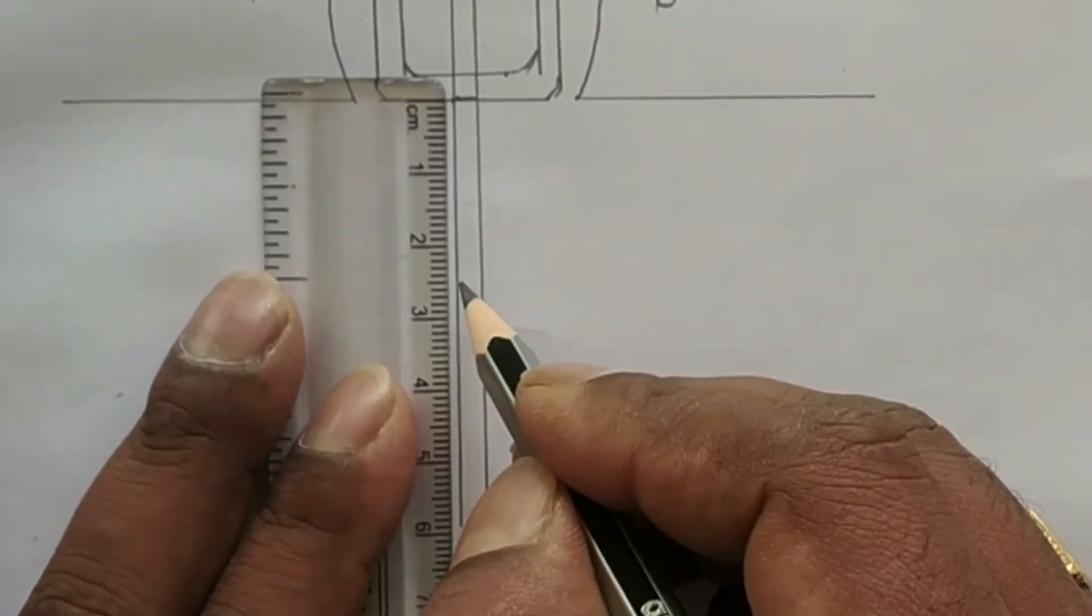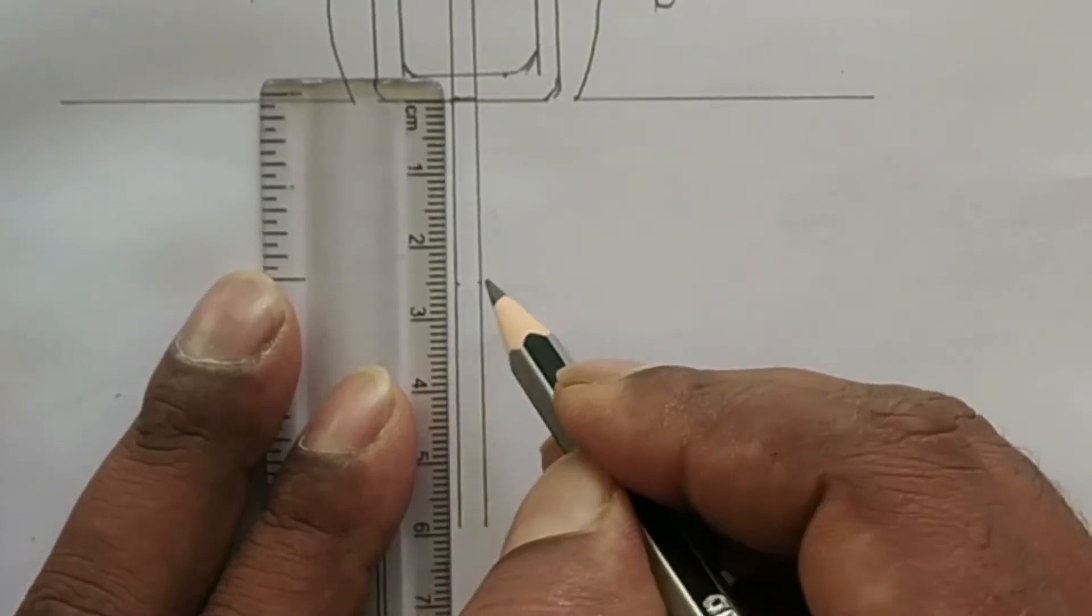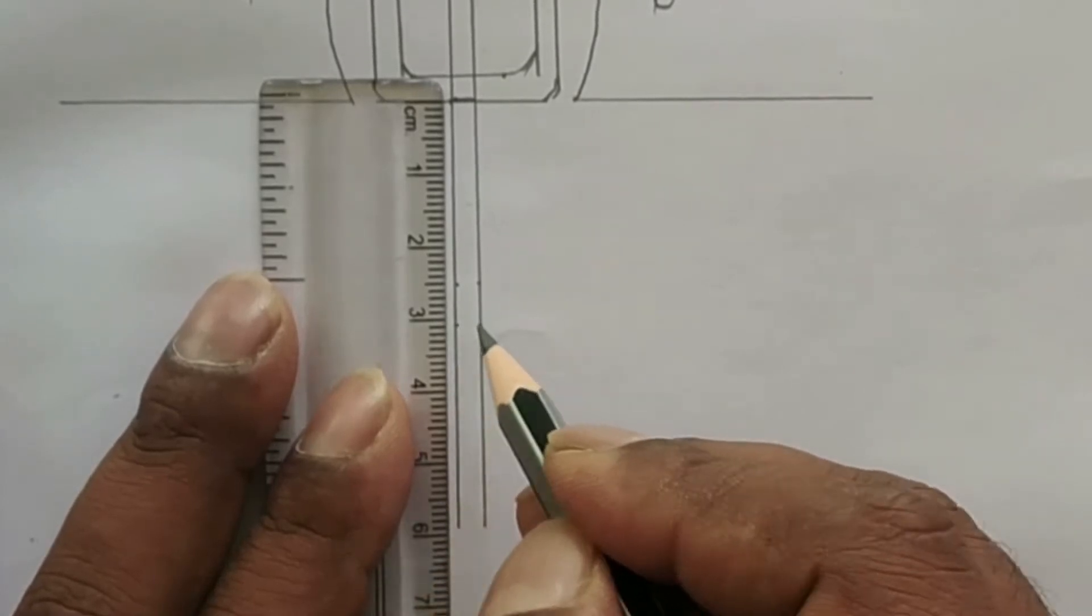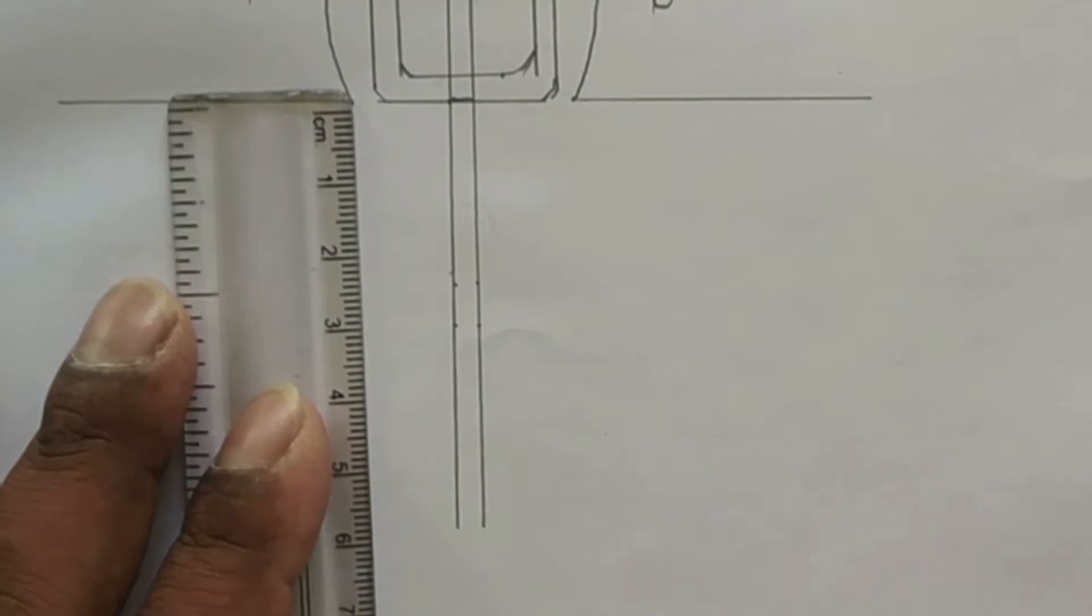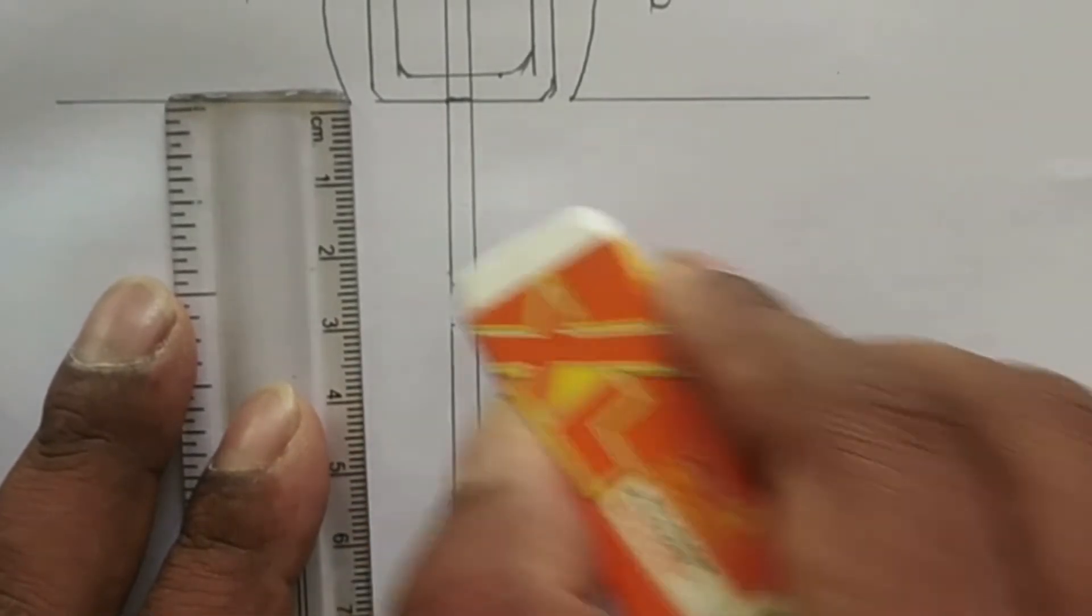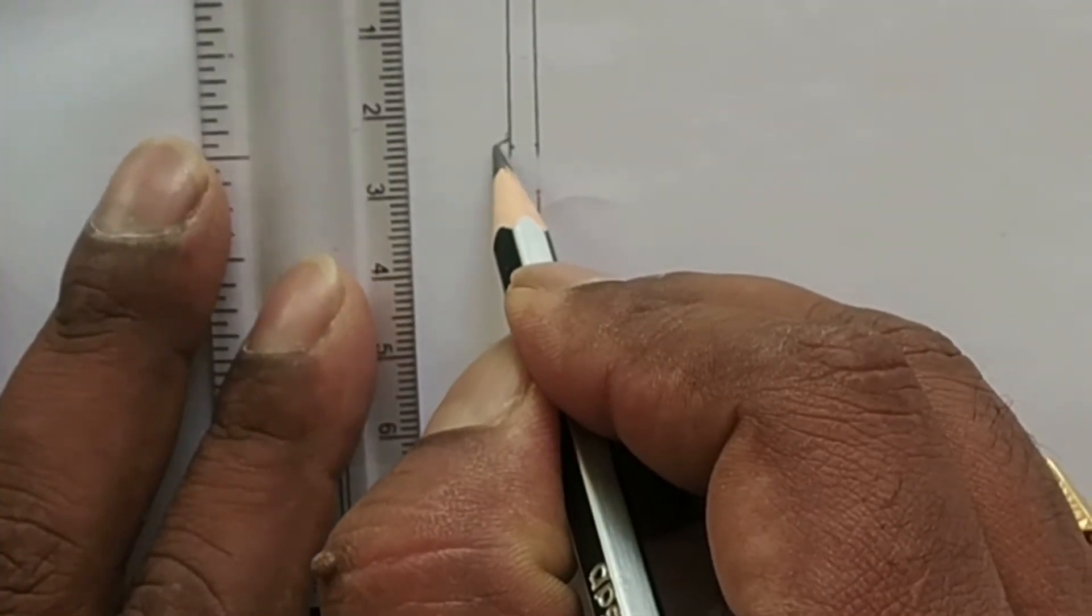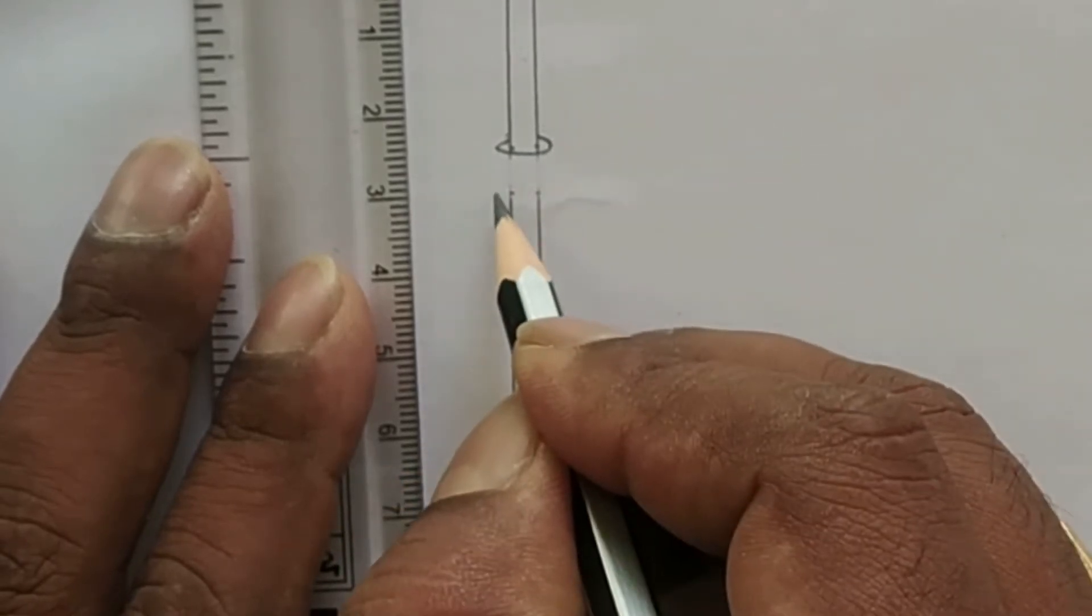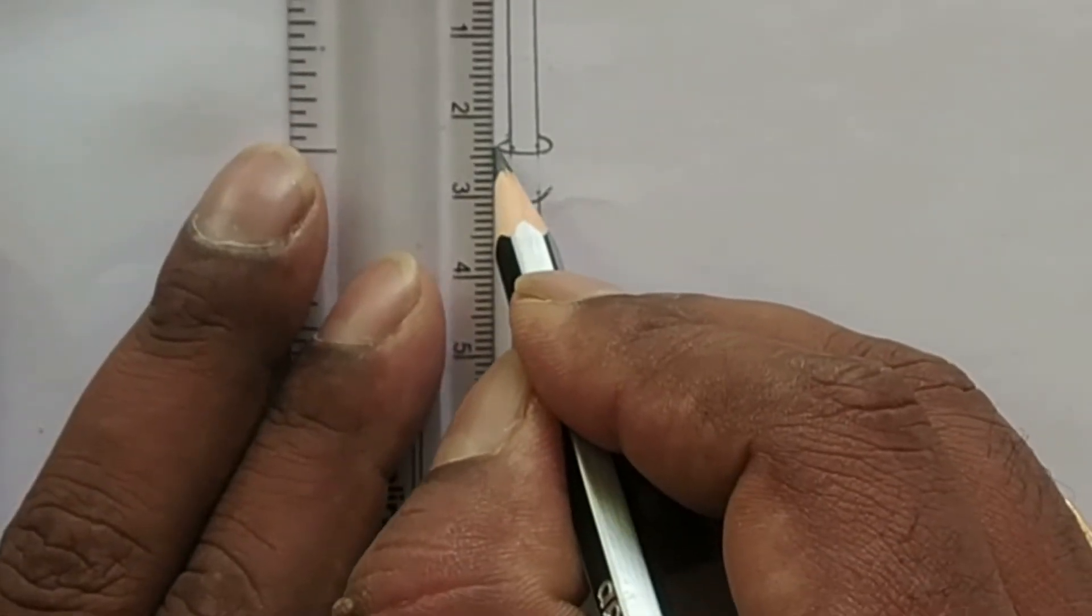From here mark 2.3 centimeter and 3 centimeter. Draw a double-shaped structure here. Before that, erase in between, then draw a double shape like this and join these two lines.